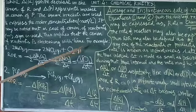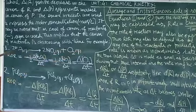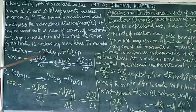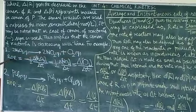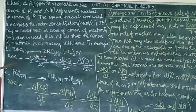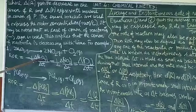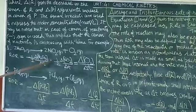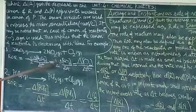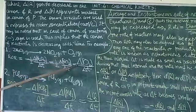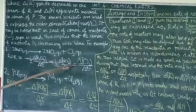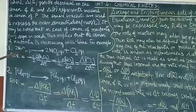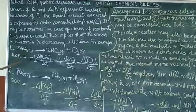For example, I have this equation. I can write the rate. Rate of reaction is equal to minus half delta N2O5 over delta T, which is equal to half delta N2O2 over delta T, which is equal to delta O2 over delta T. Note the minus sign before the reactants.